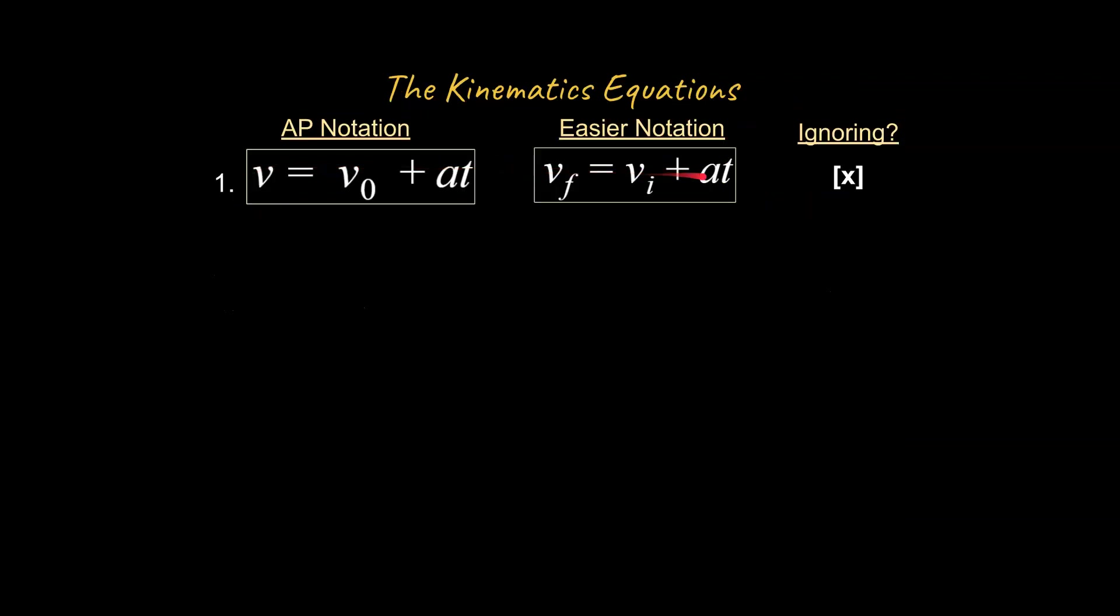All right, so let's see what those equations are going to be. Okay, first of all, I've shown them in two different ways. So this is the AP notation by the college board. This is what I consider to be an easier notation. So we mean v final, v initial, acceleration, and time. And we're either working on the x-axis or the y-axis, you could say. What are we ignoring? Well, in this case, we're ignoring our x or our delta x, this could say over here. So generally, we're ignoring position or change in position, which would be displacement.